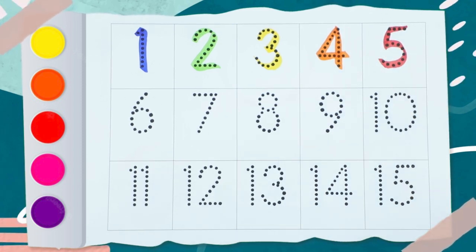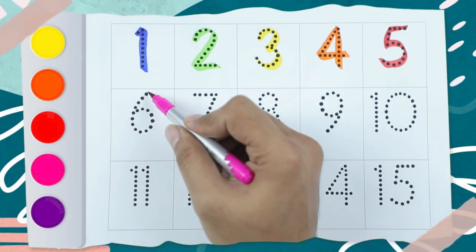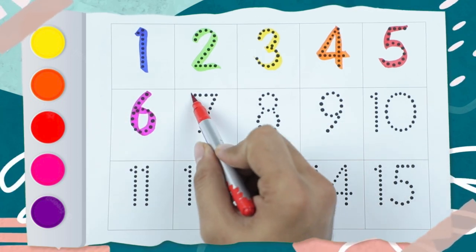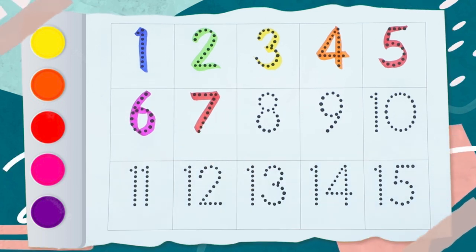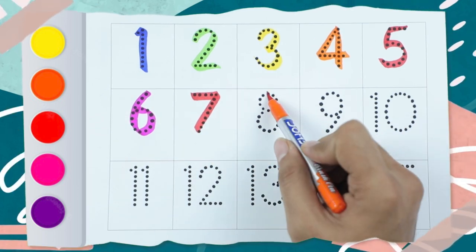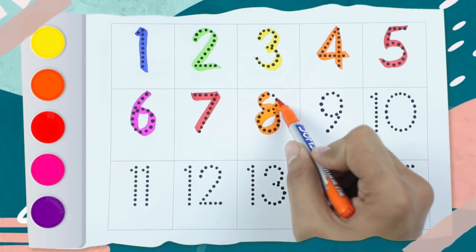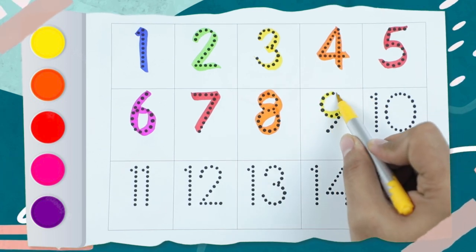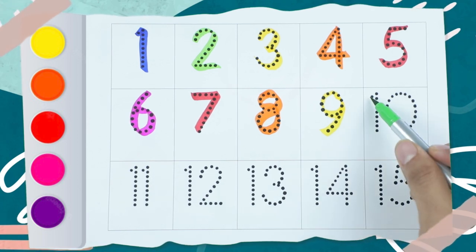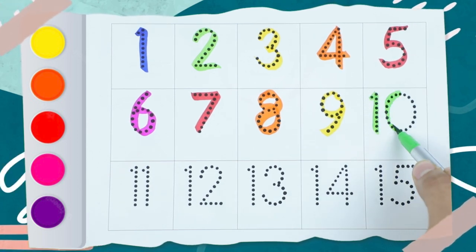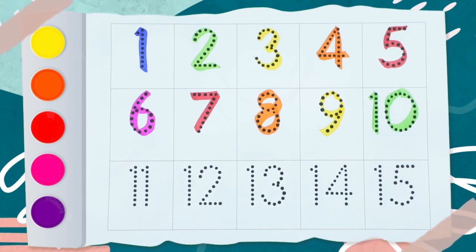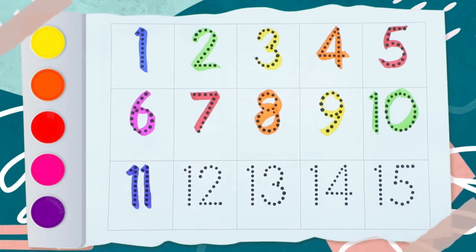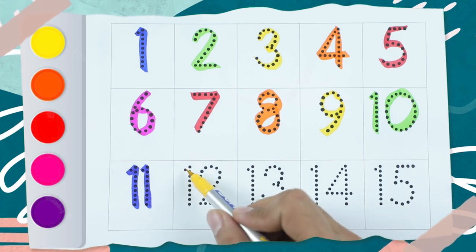Now pink color, number 6 is red color. Number 7 is orange color. Number 8 — it's number 8, yellow color. Number 9 is green color. Number 10 — it's number 10, blue color. Number 11 — it's 11, yellow color.